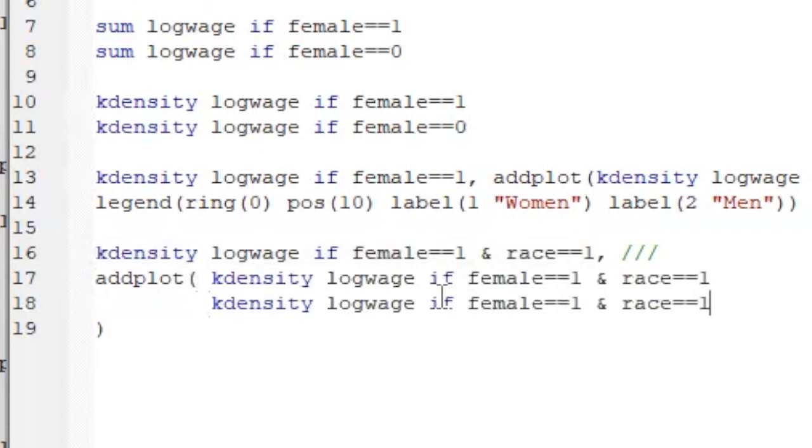We can concatenate multiple plots within the add plot option. And they should be separated by two vertical lines. And again, don't forget the triple slashes to mean that we are still working on a single line.